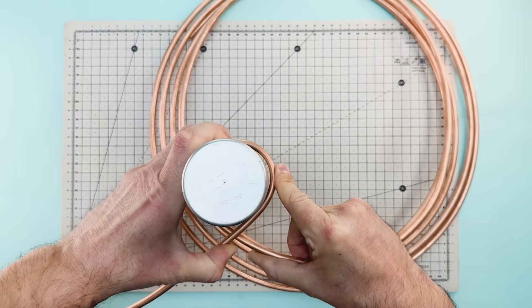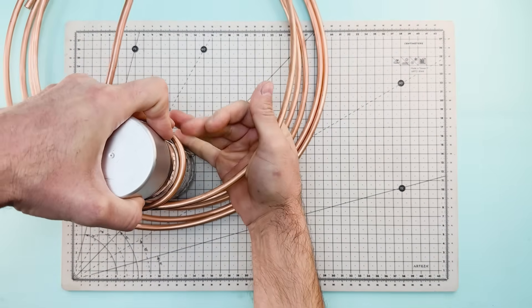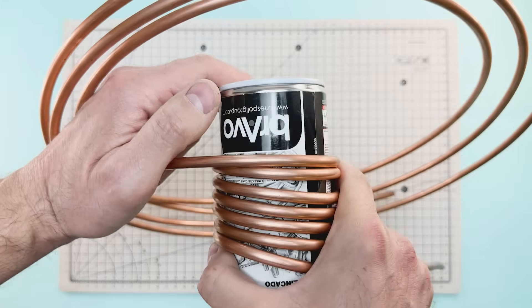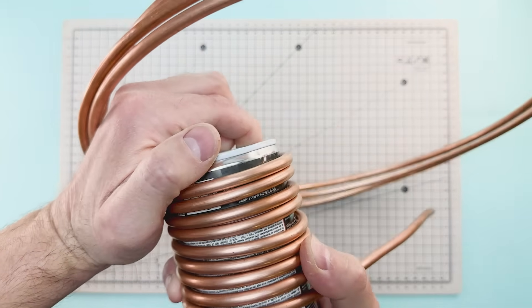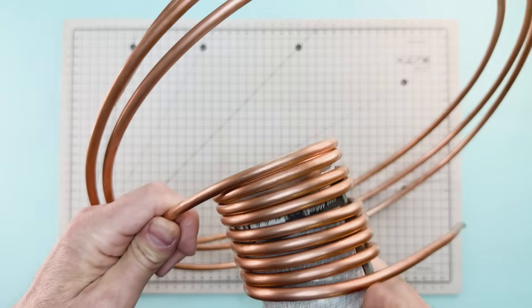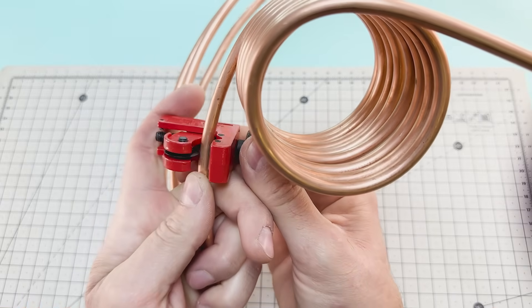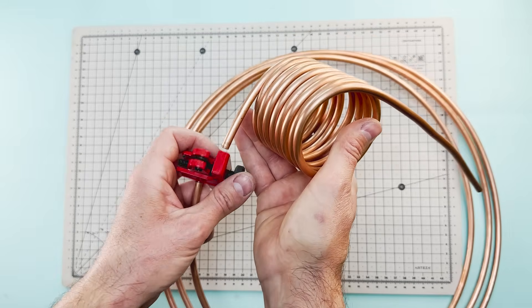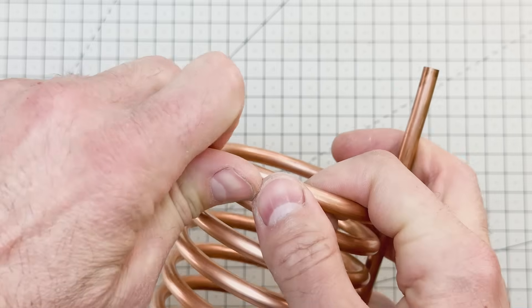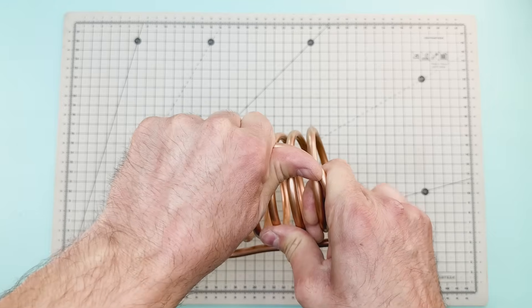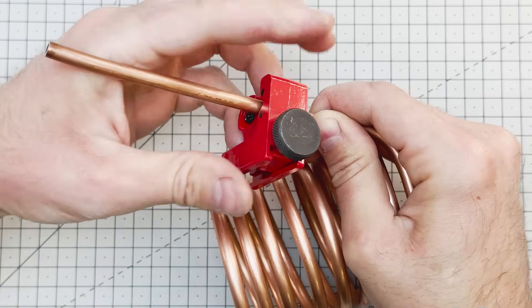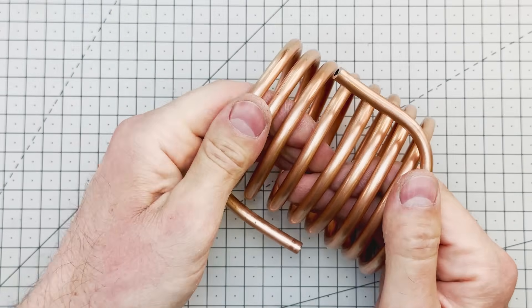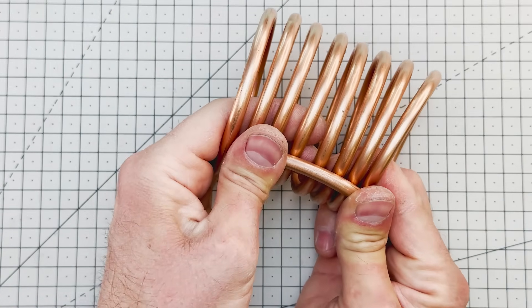What we're creating is a real miniature refrigeration system capable of lowering the air temperature down to minus 10 degrees Celsius or to chill some drinks in just a few minutes. Once we have about 8 loops, we proceed to cut the tube and slightly bend the ends so we can connect them later on. This tube, thanks to its excellent thermal conductivity, will serve as our evaporator.